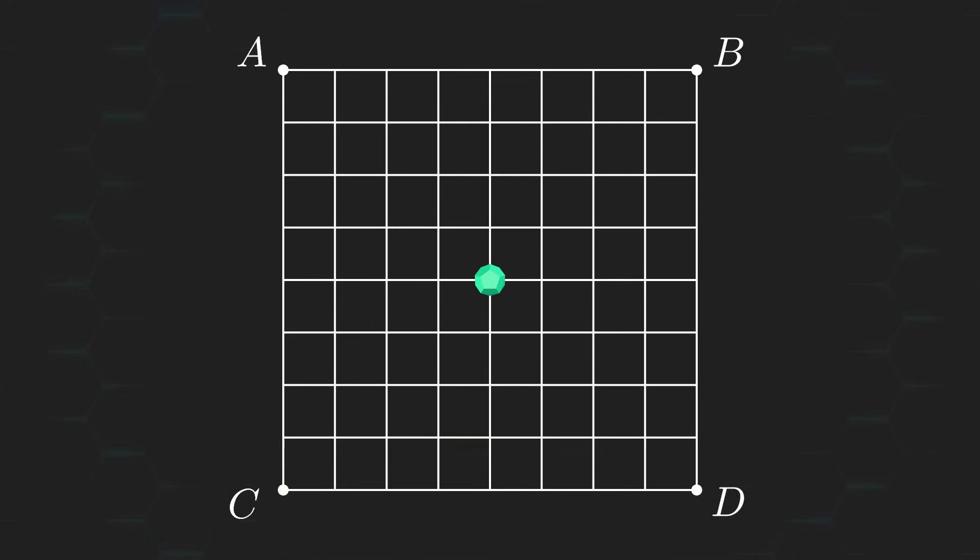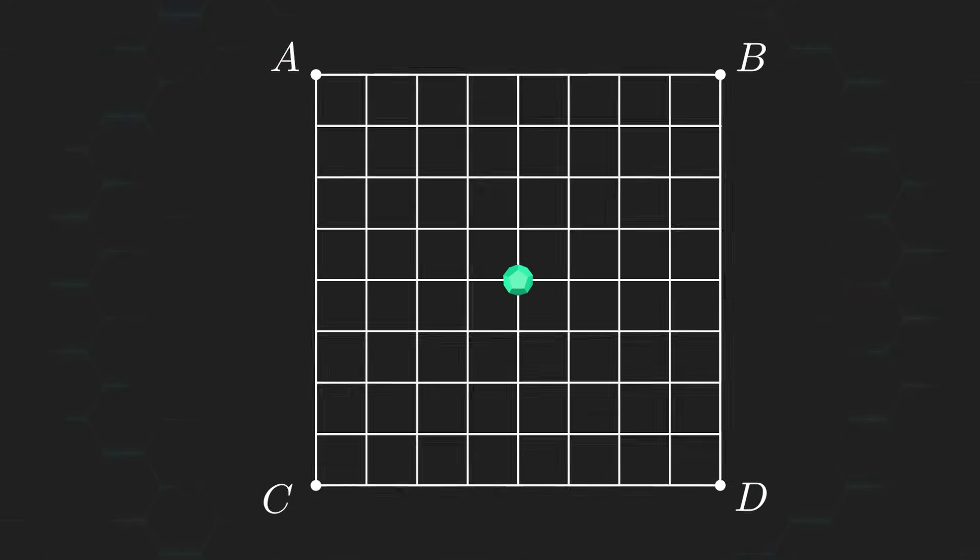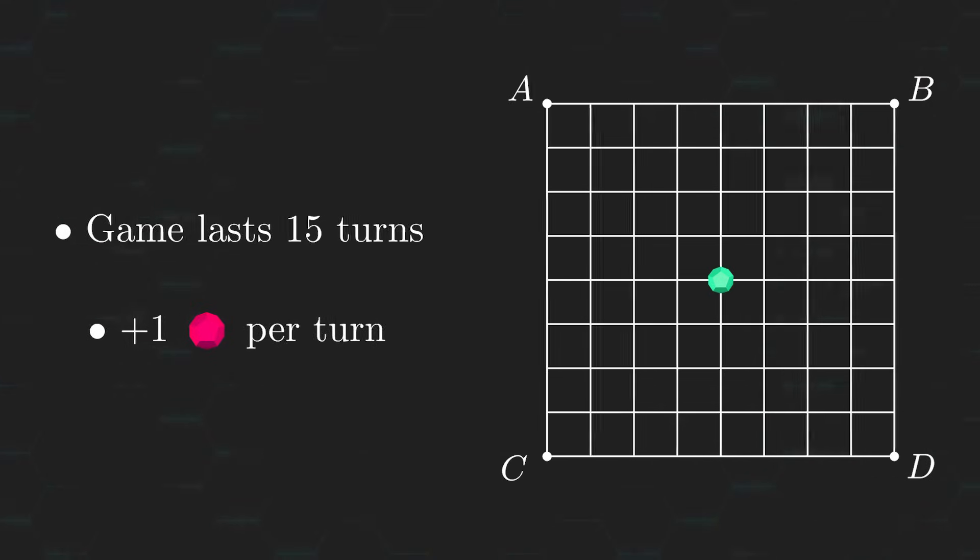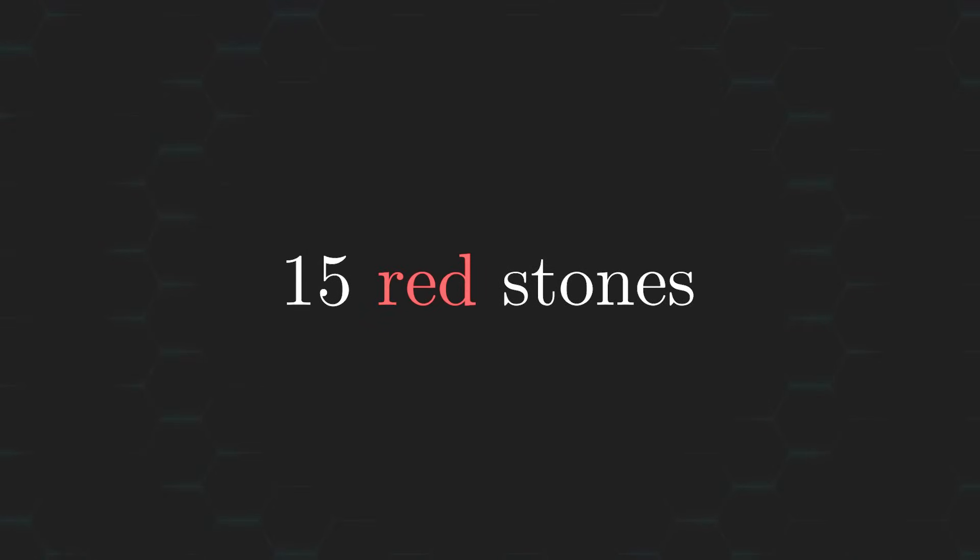Okay, as far as how many redstones will be on the board after a game of optimal play? Well, since the game is always over after 15 turns, and since exactly one redstone is added to the board at the end of each of our turns, then no matter how an optimal game is played out, there will always be 15 redstones on the board by the end of the game.